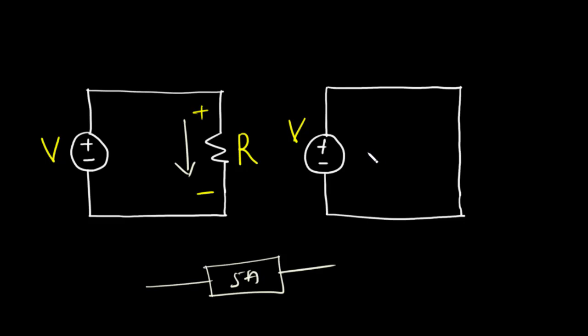Notice that a short circuit is also a closed circuit, because there is no break in the circuit and current is able to flow throughout the circuit.